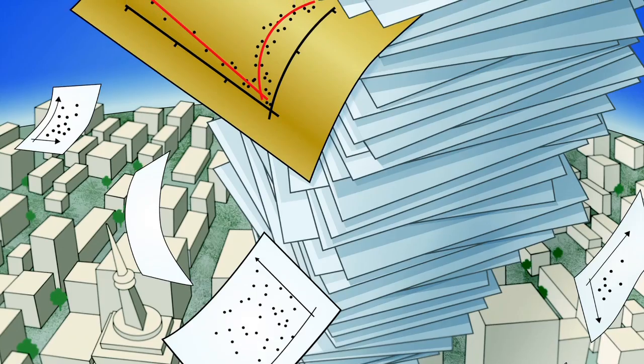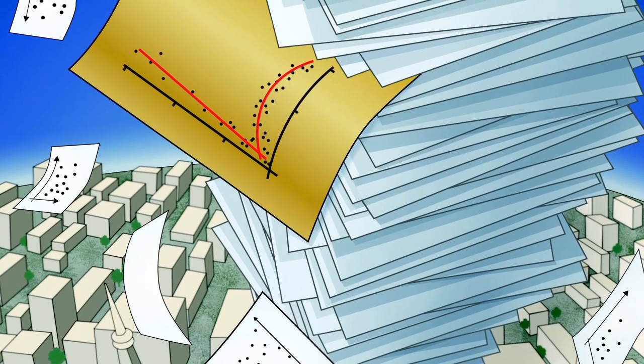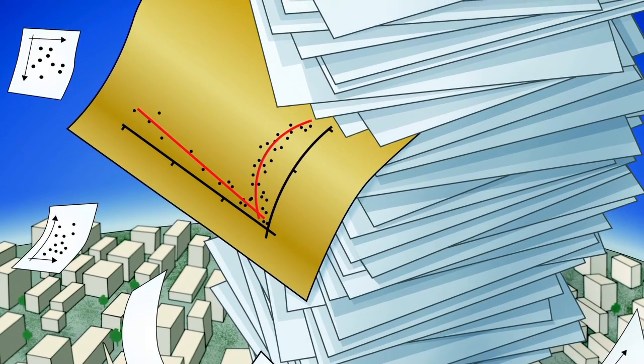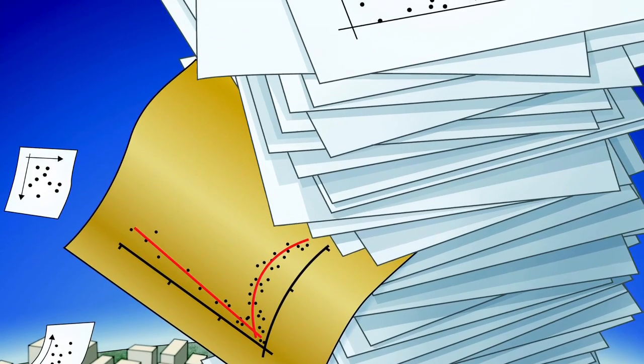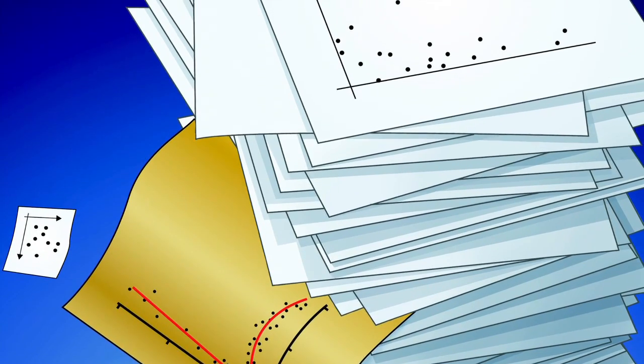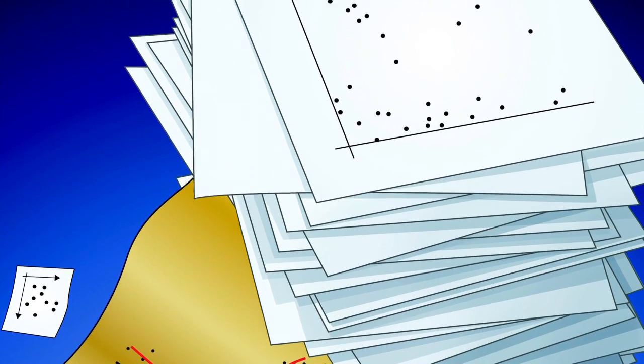In one of the examples from our work, if you plotted every pair of variables on a different piece of paper and stacked them up, they'd rise to over six times the height of the Empire State Building. When we start talking about these scales, it becomes really hard for the human eye to do this type of analysis on its own.